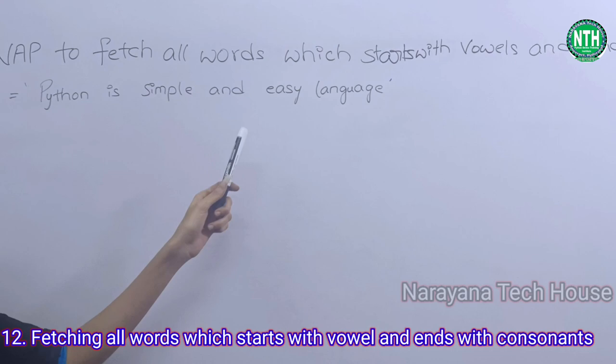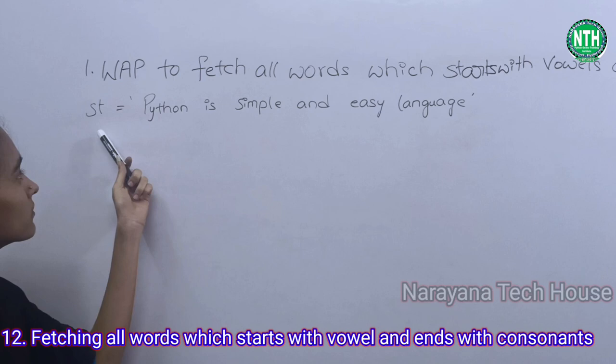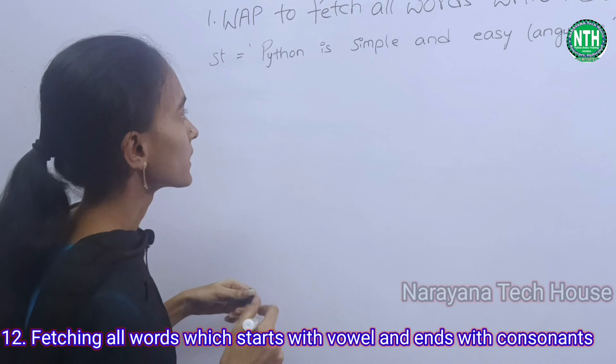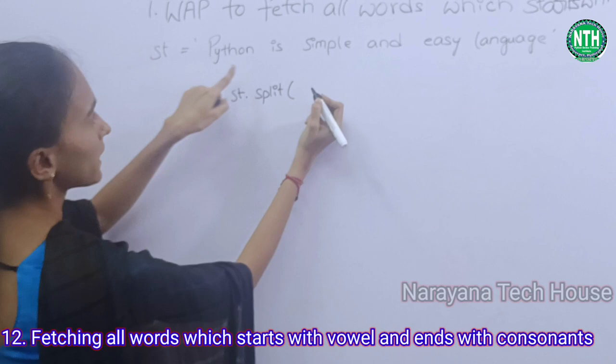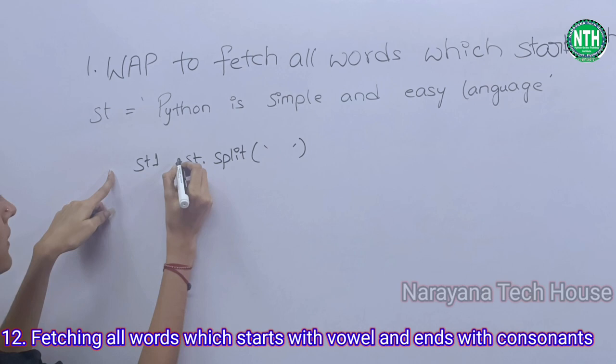In this question, I take the given string: 'Python is simple and easy language.' First of all, we have to split the given string by using the split function — st.split() — wherever a space is there, and assign it to st1.